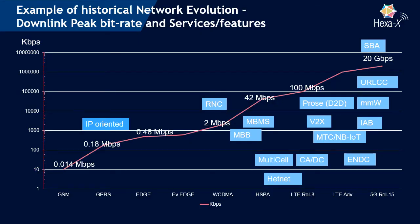Let's first talk a bit about evolution and expansion. For this we have one simple example shown here in this plot. You can see on the X-axis the different generations of mobile networks, and then with the solid line you can see an indication of the downlink peak bitrate for these different generations. This has steadily increased until the latest versions — in this case 5G NR 15 — which constitutes an evolution of capabilities.